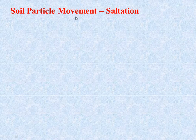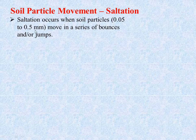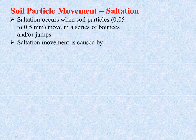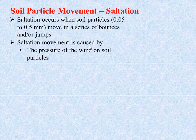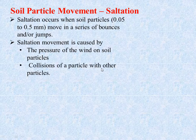Let's look at the process of saltation. Saltation occurs when soil particles of size 0.05 to 0.5 mm move in a series of bounces and jumps. This saltation movement depends on the pressure of wind on soil particles and collision of particles with other particles.